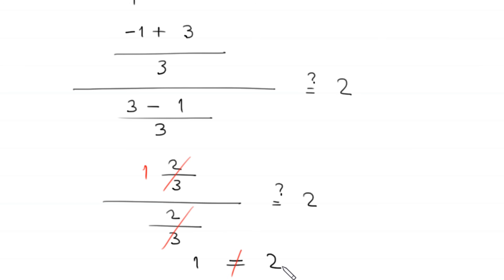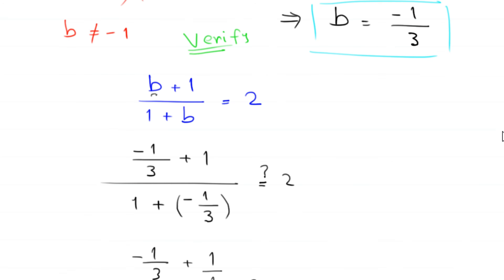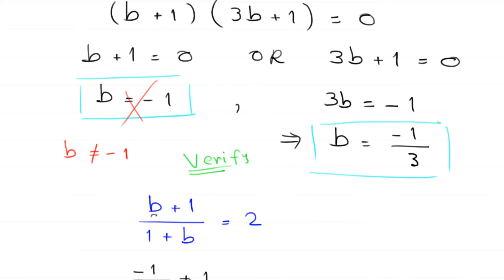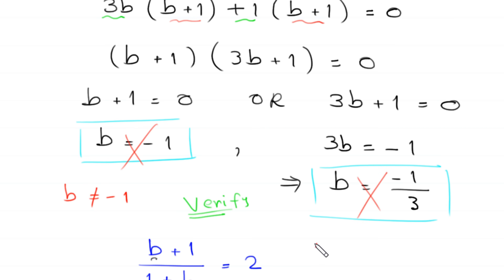This means the second value of b, negative 1 over 3, is not a solution of this equation. So we conclude that this equation has no solution.